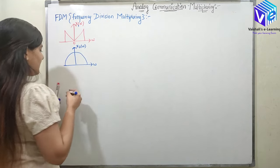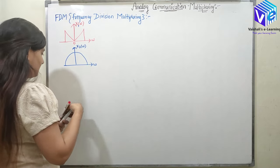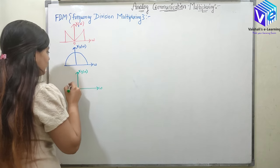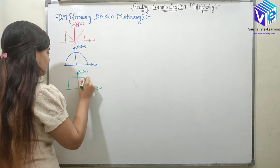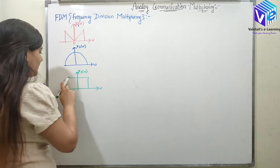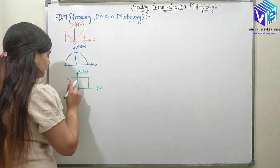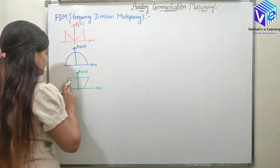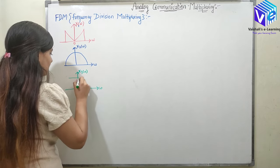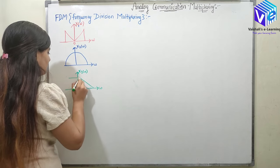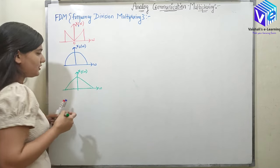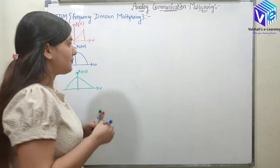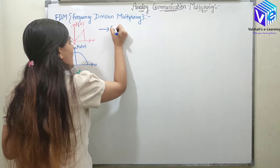Let's suppose x2 of omega looks like this. And let's suppose this is my x3 of omega. So now what we do in modulation is we superimpose the signal on a high frequency carrier with the help of a modulator.